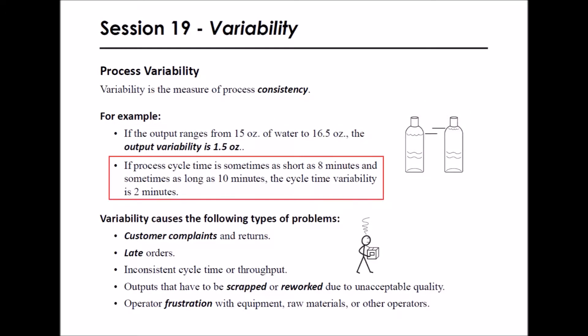If process cycle time is sometimes as short as 8 minutes and sometimes as long as 10 minutes, the cycle time variability is 2 minutes.